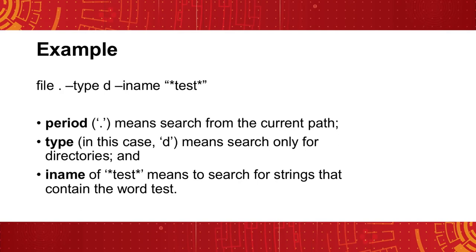For example, to search for directories that contain the string test accessible from our current working directory, we can use: find . -type d -iname "*test*". The period means search from the current path. The type d means search only for directories. And the iname *test* means to search for strings that contain the word test. The find command is extremely useful for finding files with a specific name, modification time, or other criteria. You can check available criteria by viewing the manual page for the find command.